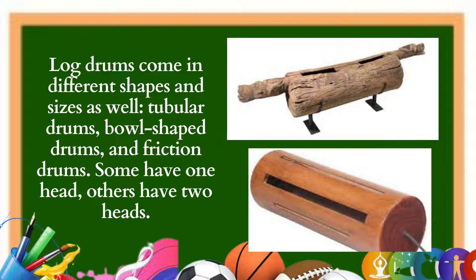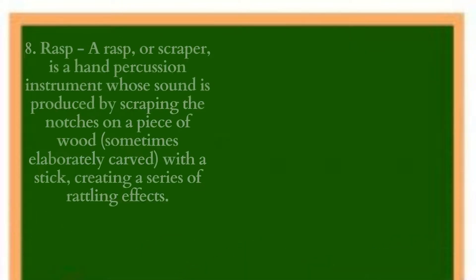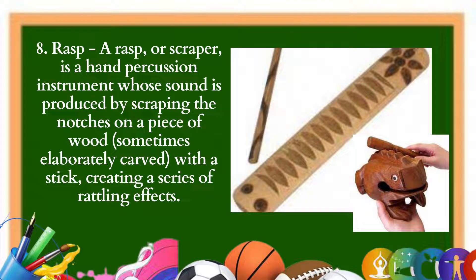7. Shakir: The shakir is a type of gourd-and-shell instrument from West Africa, consisting of a dried gourd with beads woven into a net covering the gourd. The feedbee is another gourd drum with cowrie shells usually strung with white cotton thread. The azats is a small gourd held by the neck and placed between hand and leg. 8. Raspa: The rasp or scraper is a hand percussion instrument whose sound is produced by scraping the notches on a piece of wood with a stick, creating a series of rattling effects.